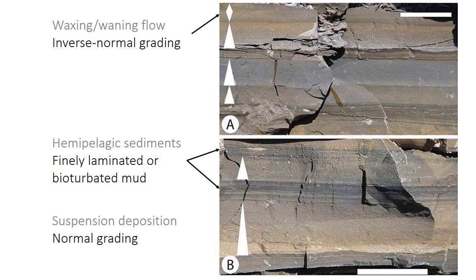These hyperpycnal deposits will be interbedded with hemipelagic deposits formed from hypopycnal plumes during normal background conditions. These might be finely laminated or bioturbated — mixed up by burrowing — so bioturbated mud. Sometimes river floods can strengthen and weaken through time, causing the hyperpycnal flow to wax and wane, giving beds that have some inverse grading as the flow strengthens and then normal grading and fining as they weaken.